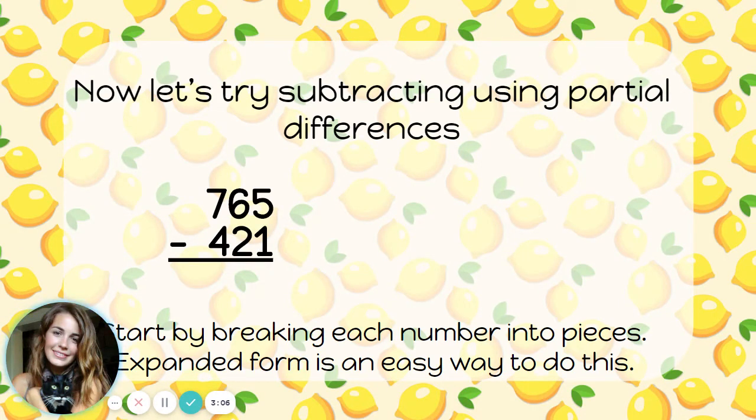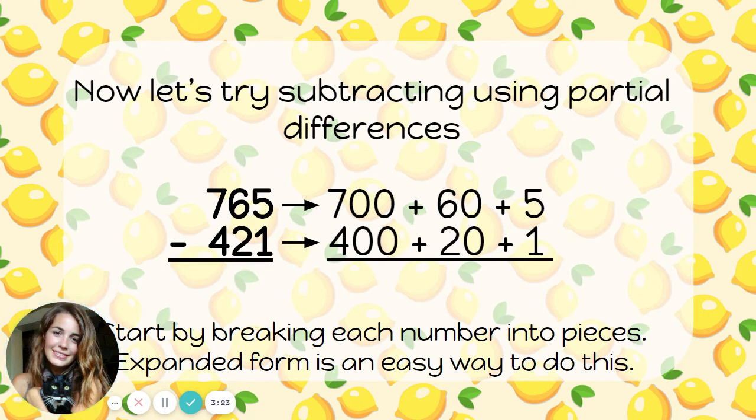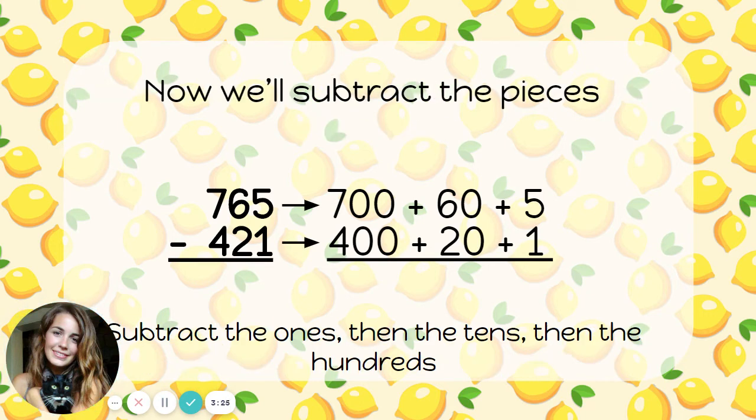So we're subtracting 765 minus 421. I'm going to start by breaking my numbers into pieces and writing them in expanded form like this. 700 plus 60 plus 5, and we're subtracting 400 plus 20 plus 1. Just like when we were adding, we're going to subtract each piece starting with the ones and then the tens and then the hundreds.